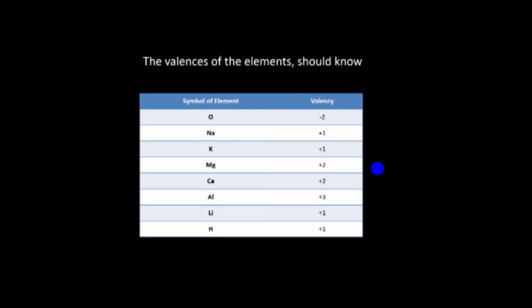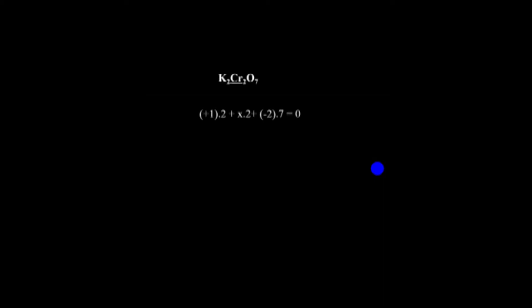Now let's use an example: potassium dichromate, K₂Cr₂O₇. Potassium is plus one and oxygen is minus two from the chart, but chromium is unknown so we call it x. The equation is: two(+1) + 2x + 7(−2) = 0. This gives 2 + 2x − 14 = 0, so 2x − 12 = 0, and therefore x equals plus six. This way we can find the oxidation number of any element.